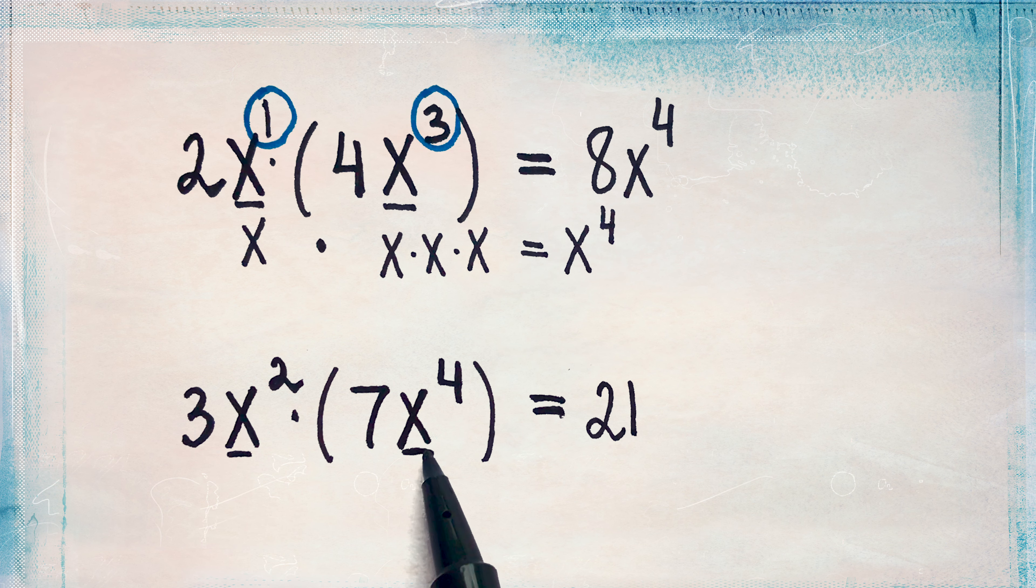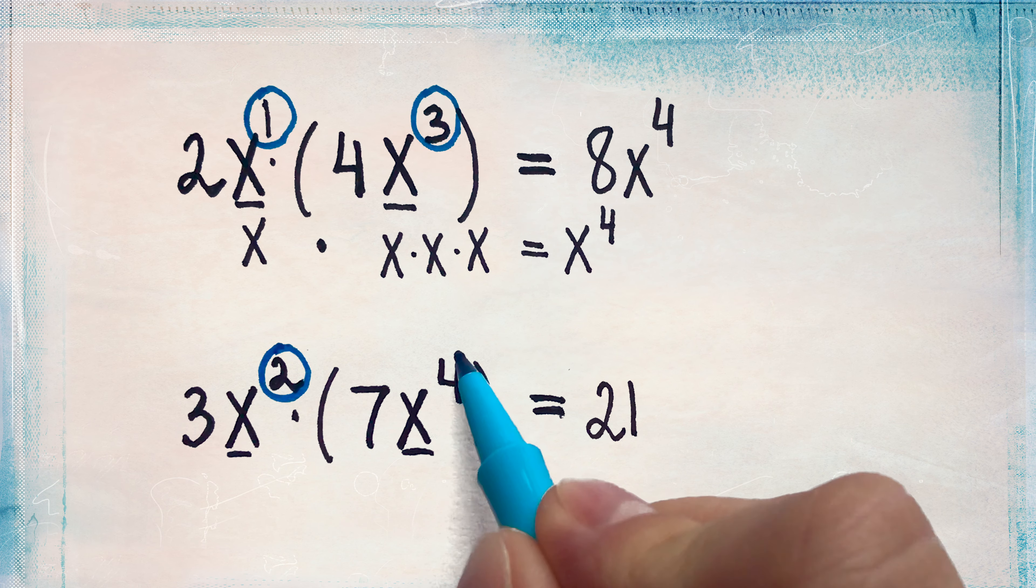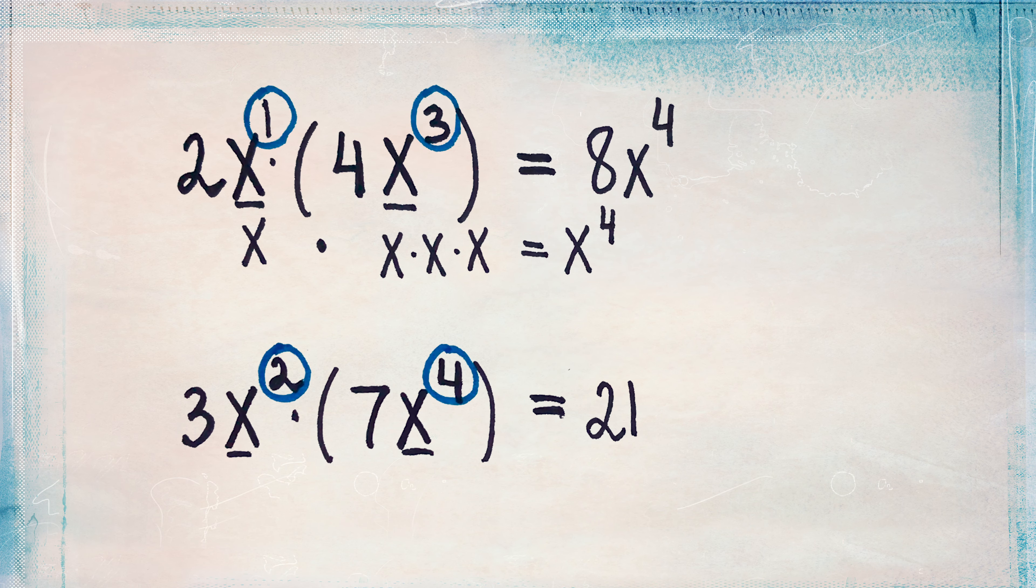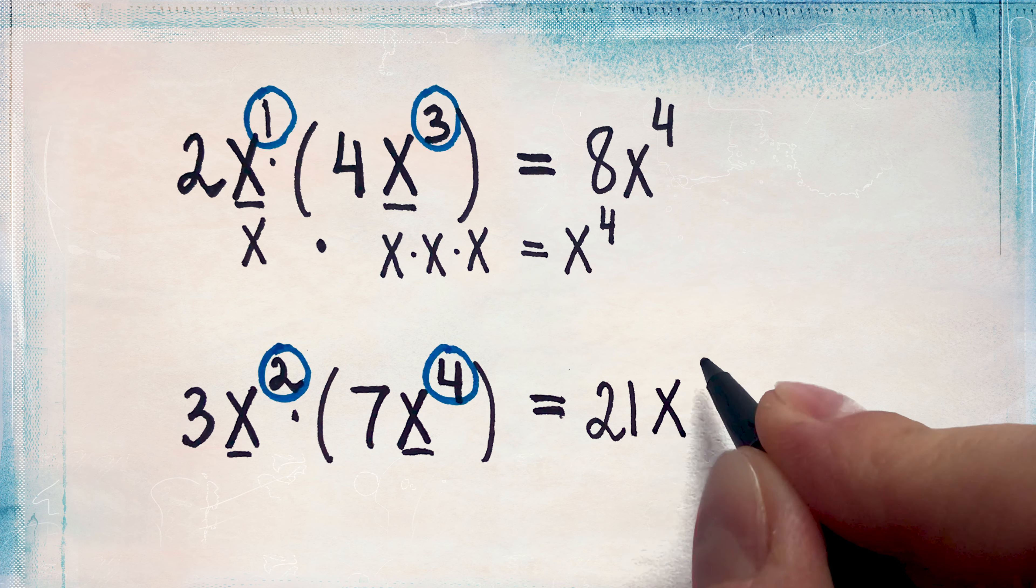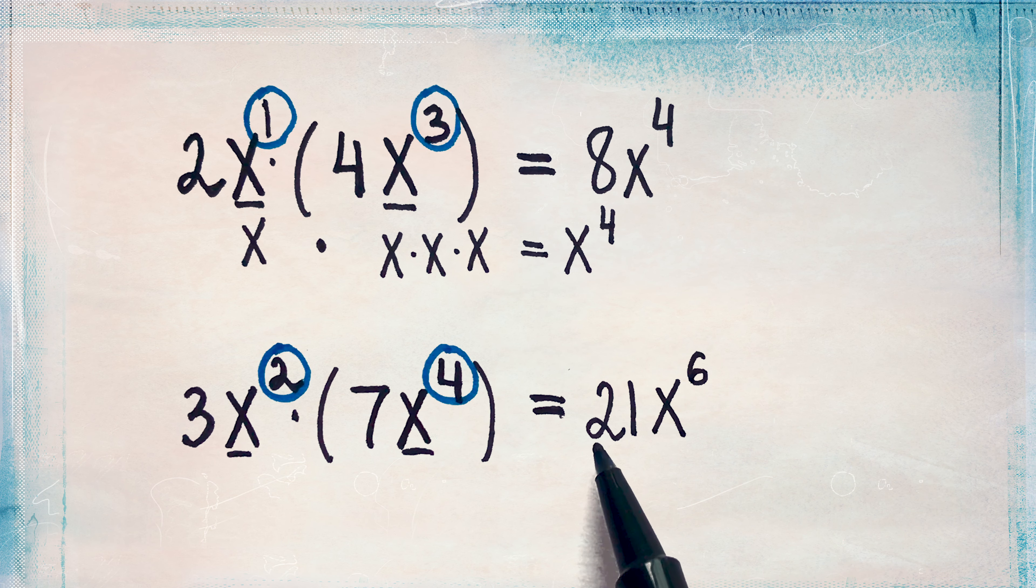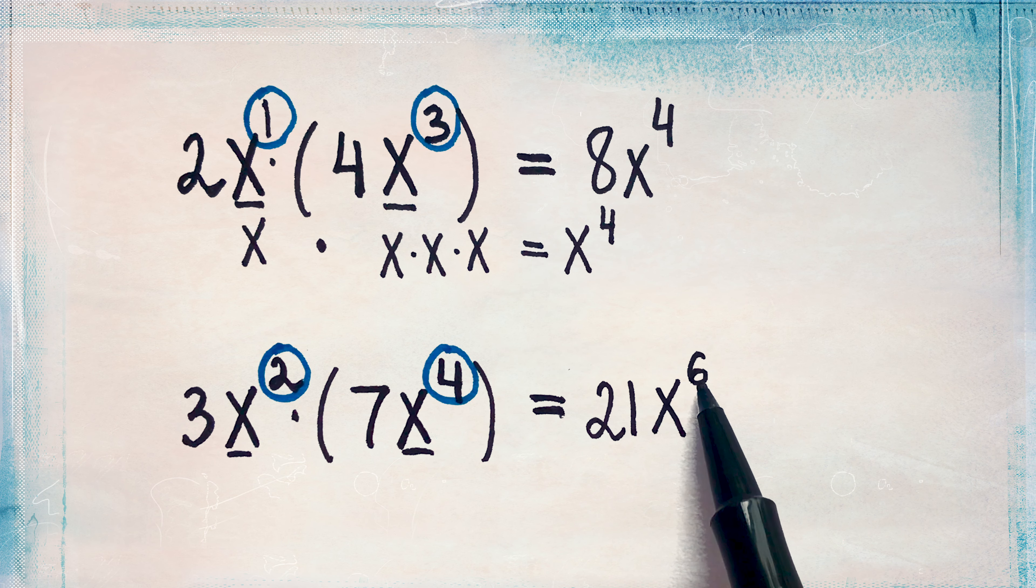Since the bases are the same, the base is x, we will add the exponents. So 2 plus 4 is 6. So we will have x to the power of 6. So the answer is 21x to the power of 6.